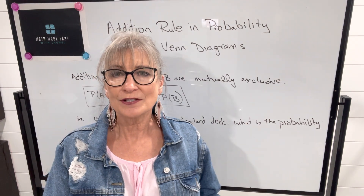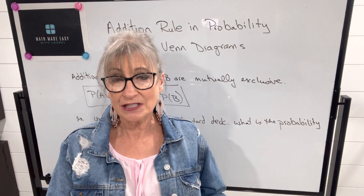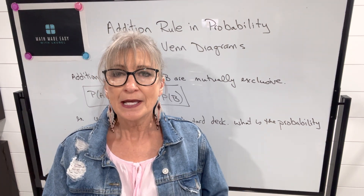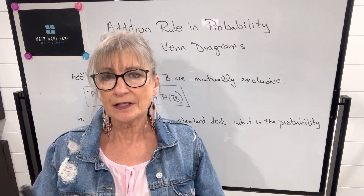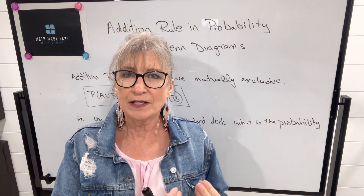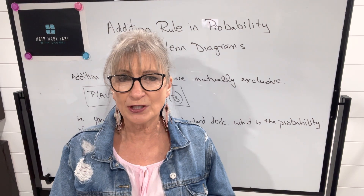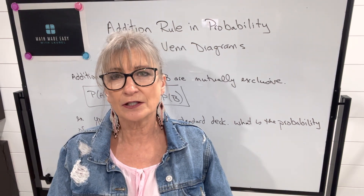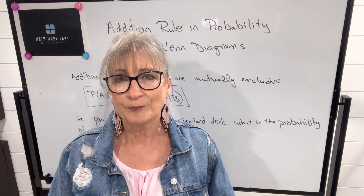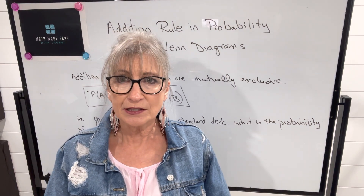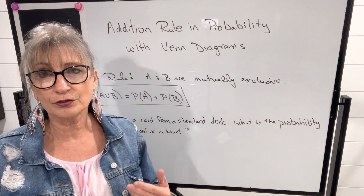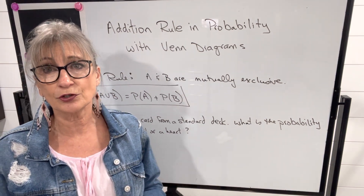In the previous video, I talked about the addition rule as well as some other rules in probability. Before I move on to the next rule, the multiplication rule, I wanted to show you how you can use Venn diagrams to organize your information, because you might see Venn diagrams in the context of the problems you'll be solving. So we're going to take a look at the addition rule, and there are two parts depending on whether your events are mutually exclusive or not.